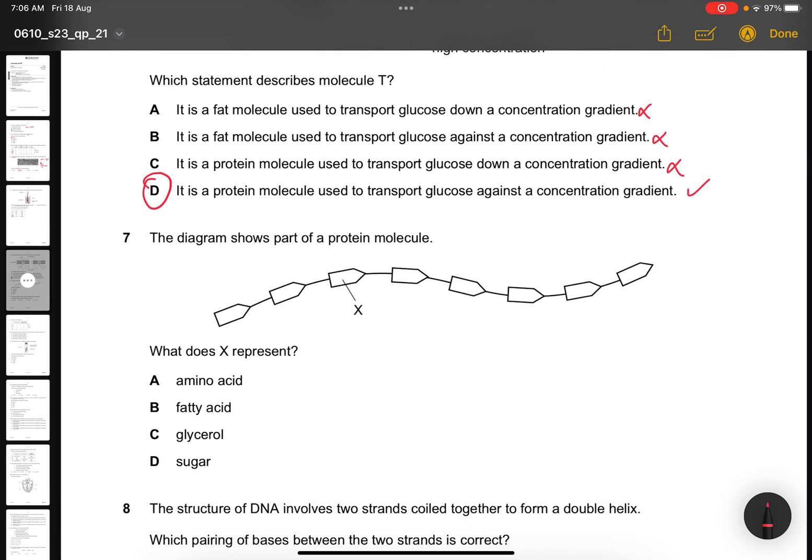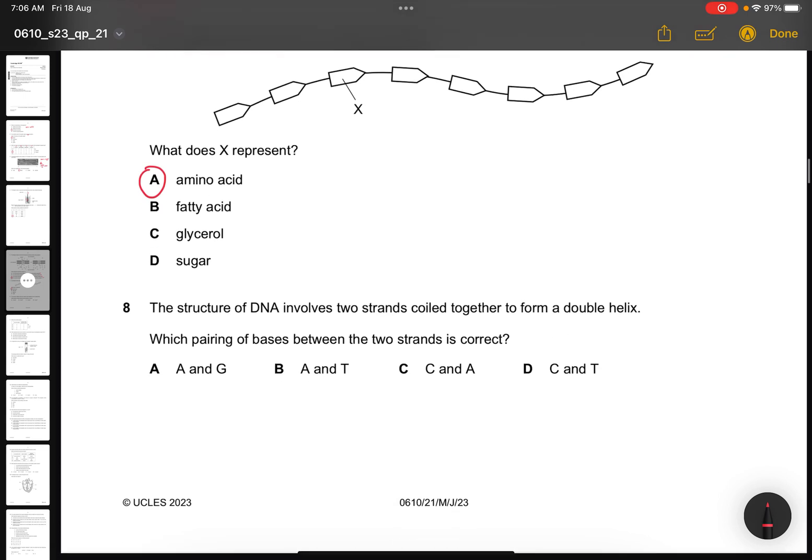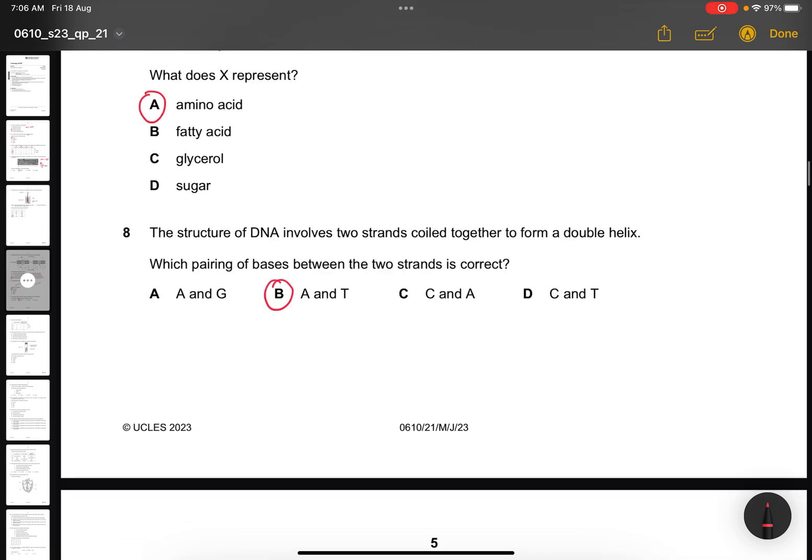Question 7. The diagram shows part of a protein molecule. What does X represent? Amino acids. Question 8. The structure of DNA involves two strands coiled together to form a double helix. Which pairing of bases between the two strands is correct? A and T.